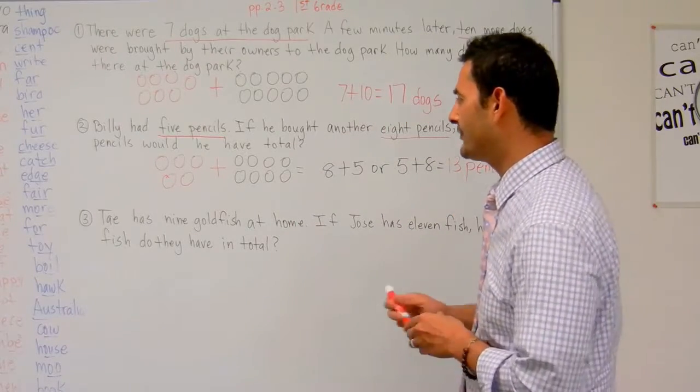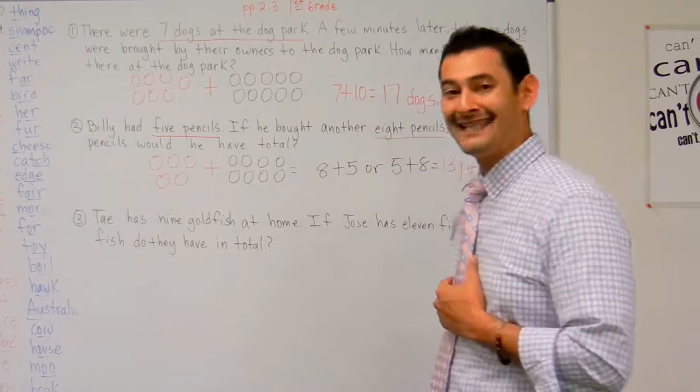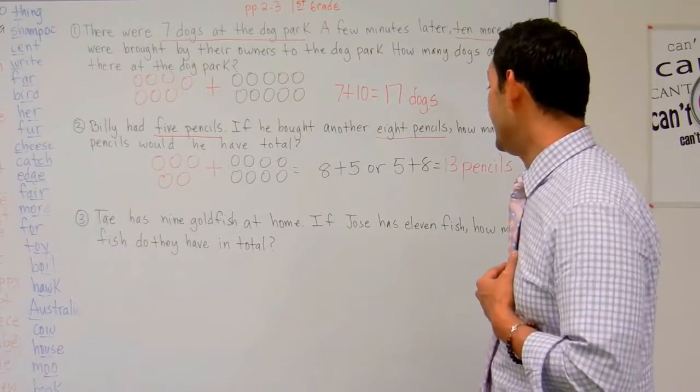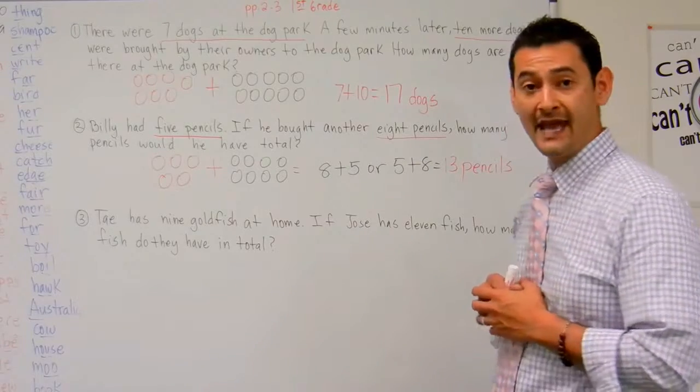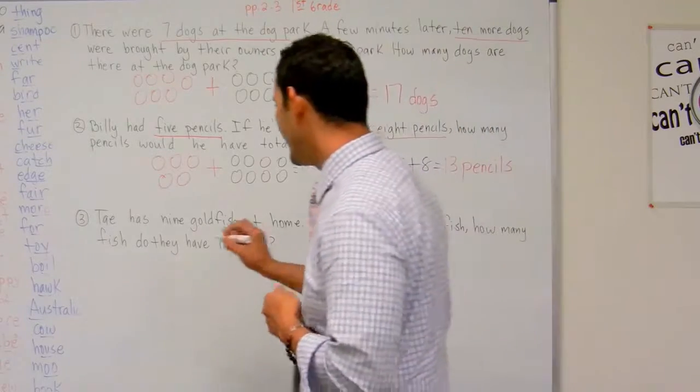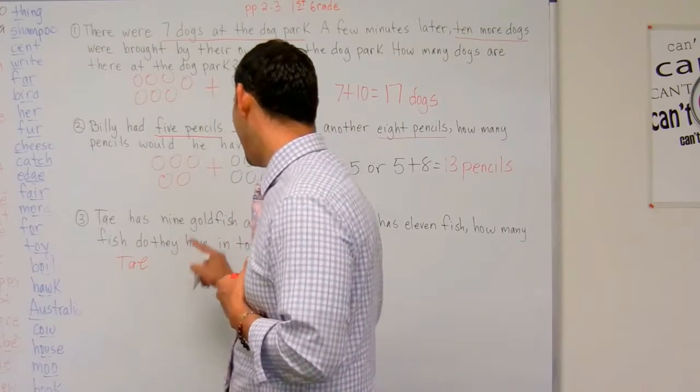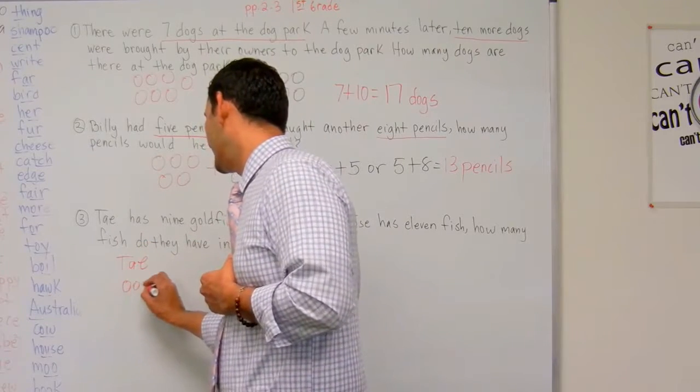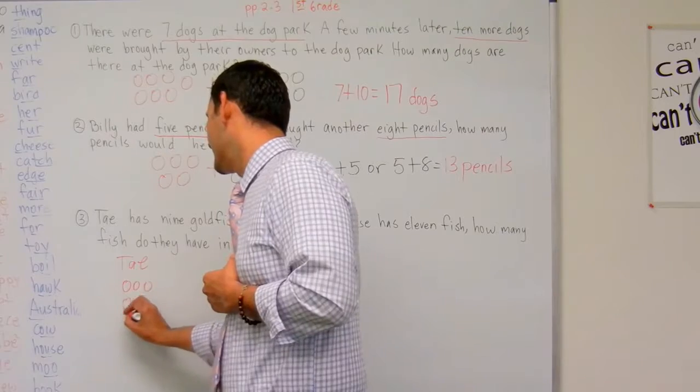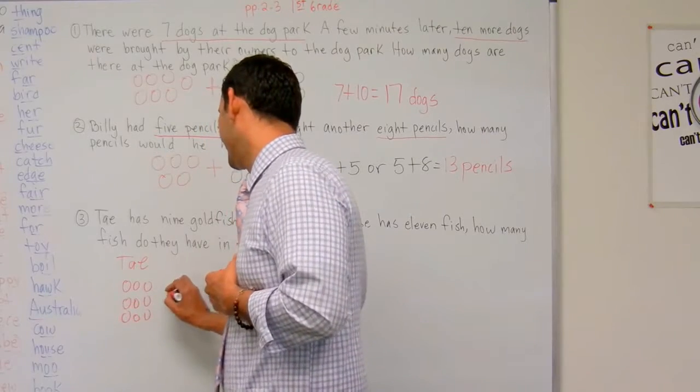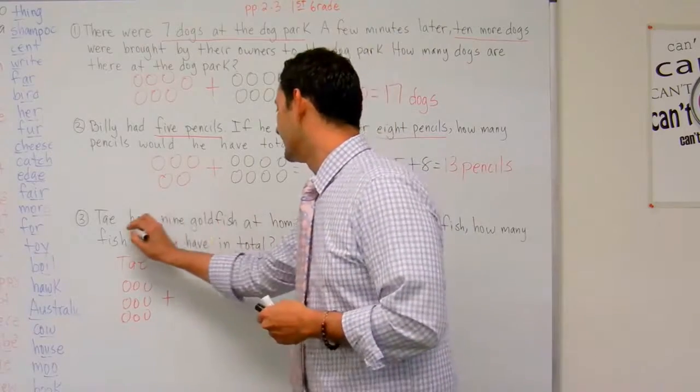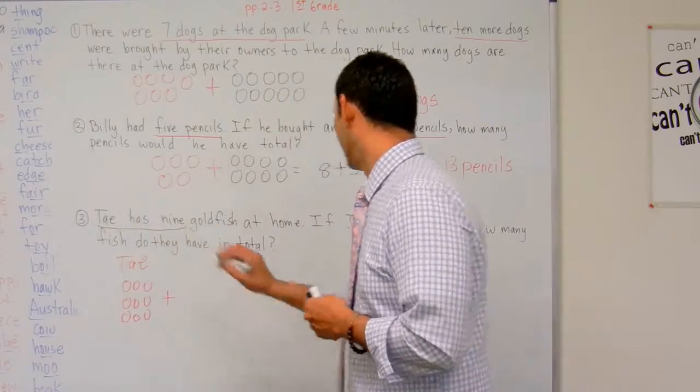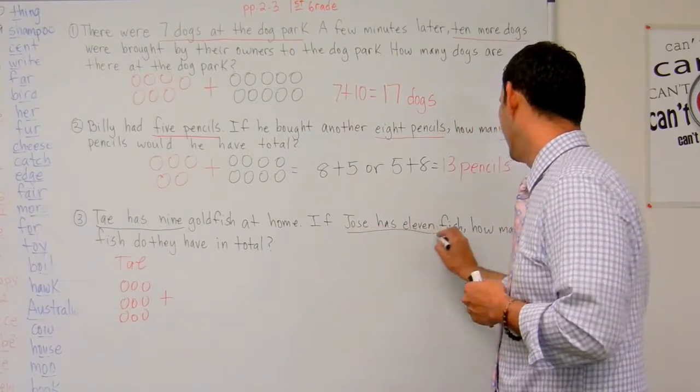Now let's take a look at number 3. Tay has 9 goldfish at home. If Jose has 11 fish, how many fish do they have in total? So here I'm going to do Tay. Tay has 9 goldfish: 1, 2, 3, 4, 5, 6, 7, 8, 9. Plus Jose, Tay has 9, Jose has 11 fish.